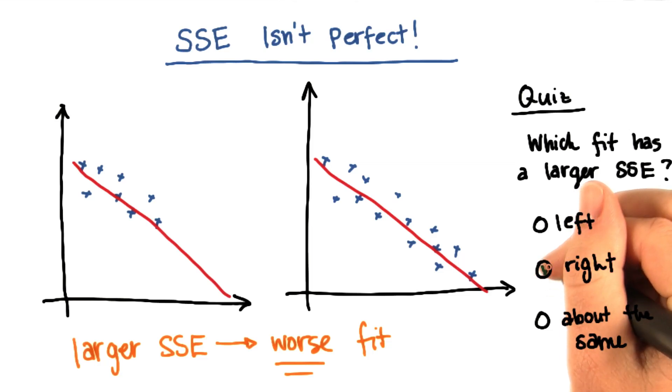In this case, the distribution on the right is going to have the larger sum of squared errors. And it should be fairly straightforward to see why.